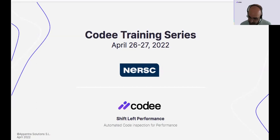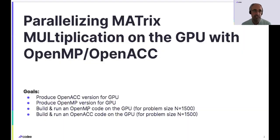Very quickly, here you can see the structure of the lab. It's essentially the same as in the first lab of Pi: produce an OpenACC and OpenMP version for GPU, build it and run it on Bermuda.